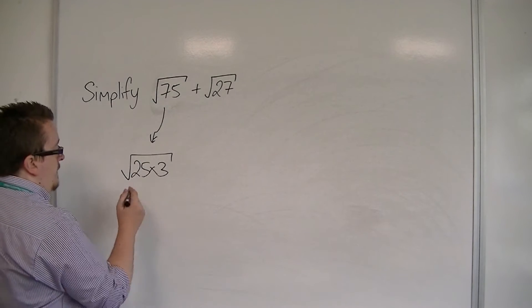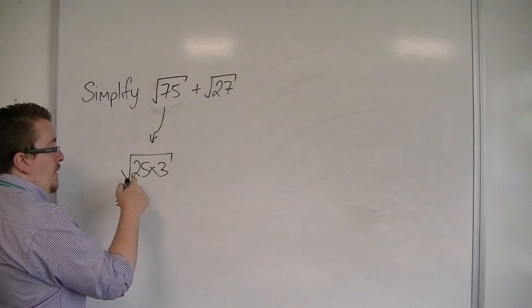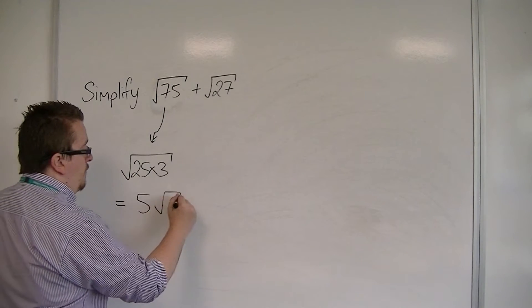Root 25 times 3 will be root 25 times root 3. The square root of 25 is 5, so this is 5 root 3.